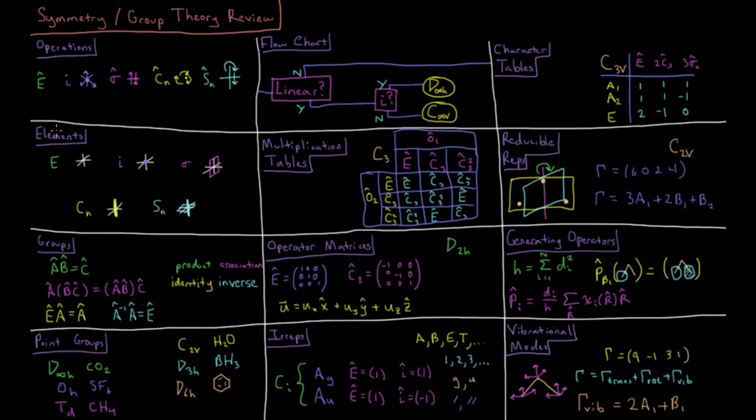Now using these operations, we can define groups. Groups have four properties, that their operations have a product, that the product is a member of the group, that their multiplication is associative, that the successive operations are associative.